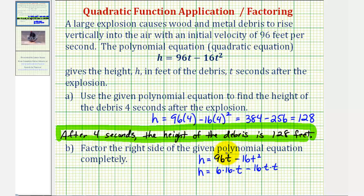In this form, we can more easily identify the greatest common factor, which would be 16t. Notice both terms contain a factor of 16t. So now we'll factor out 16t.